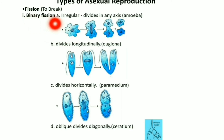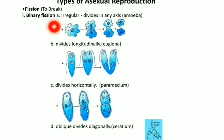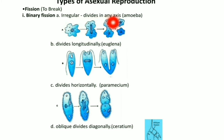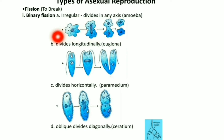Binary fission: as the name suggests, binary means two and fission means breaking — breaking into two is binary fission. Binary fission is further classified into four categories: irregular binary fission. Amoeba shows irregular binary fission because Amoeba's shape is irregular, so it can divide in any plane.